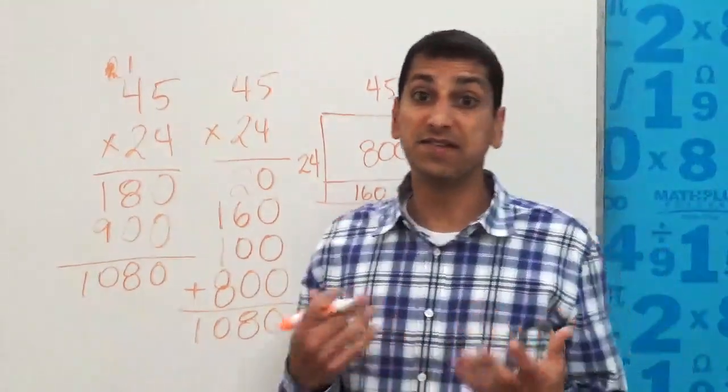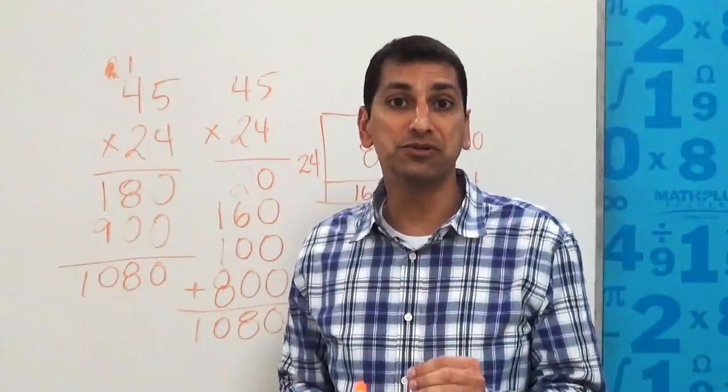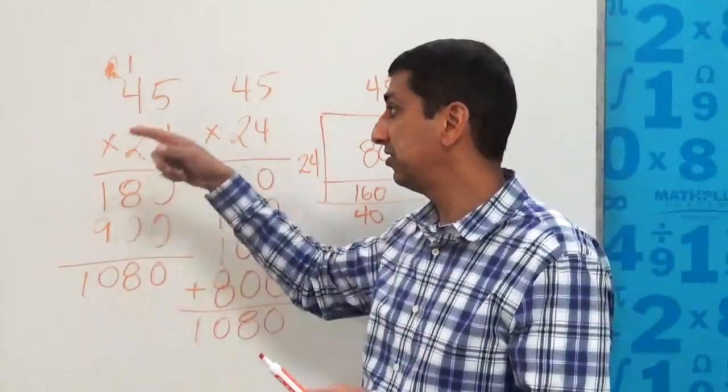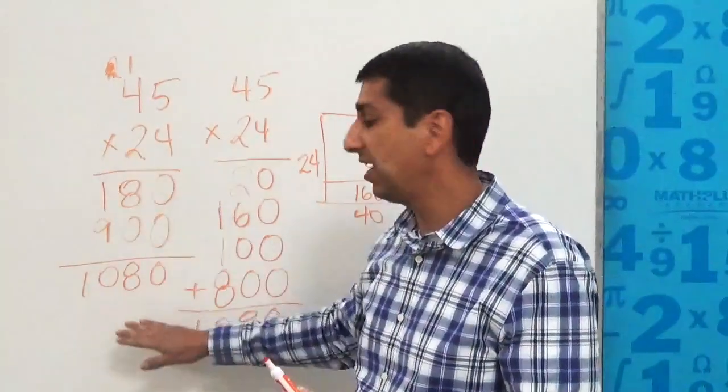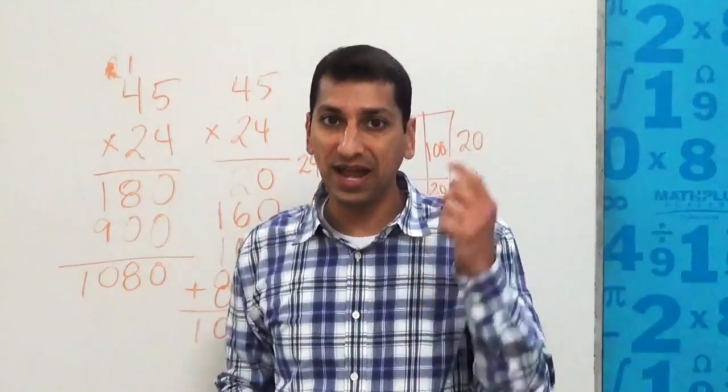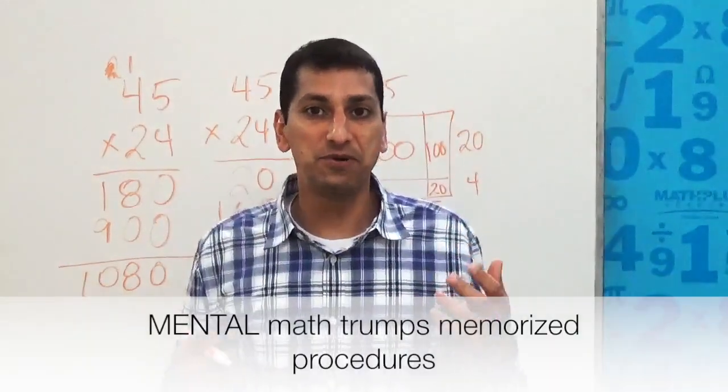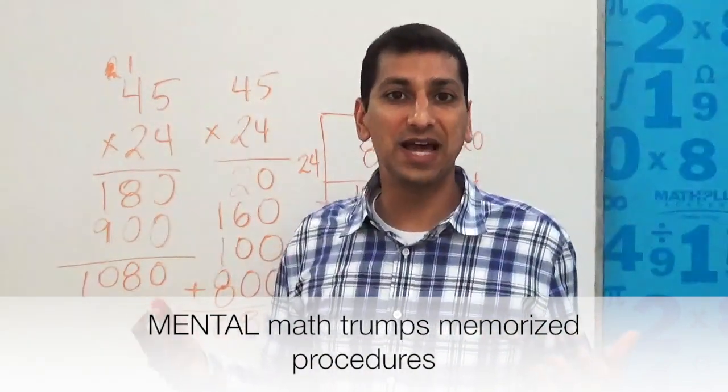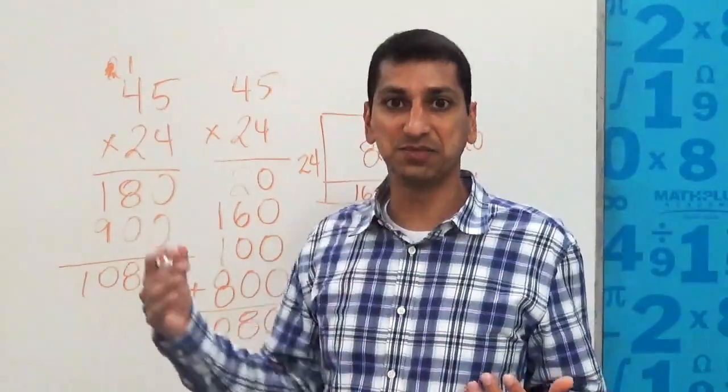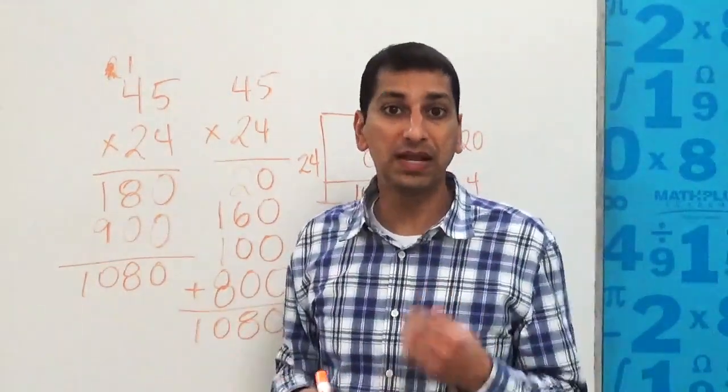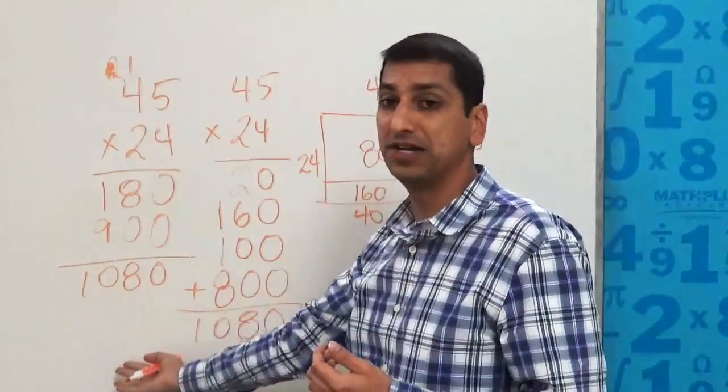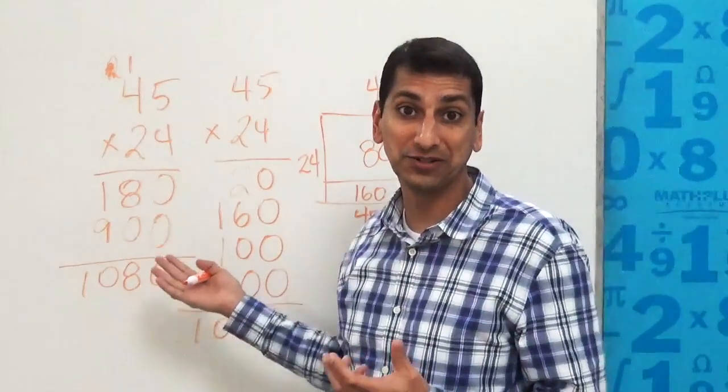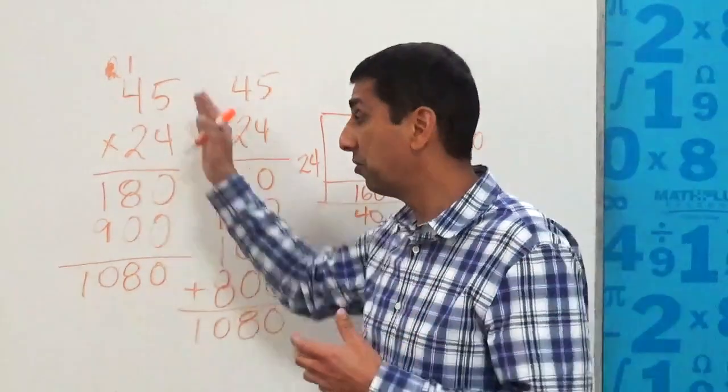And it also helps them identify at times when they don't need the standard algorithm. So an example of that would be, say we have 73 times 10. I can't tell you how many times I've seen students line that up vertically just like this and execute the algorithm and put in a bunch of zeros and go through all the steps to get a result that they should have been able to get just using their mind. If you understand place value and what 10 means in our number system, then 73 times 10 is just 730. You're just moving the decimal place.